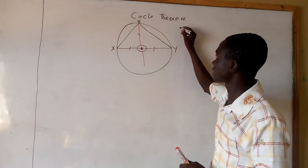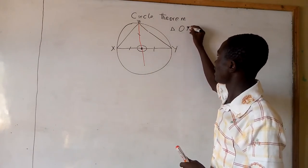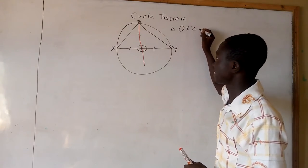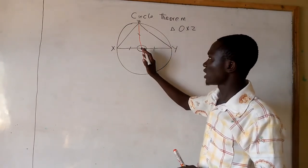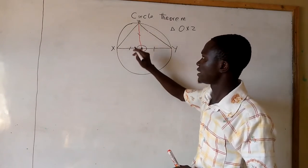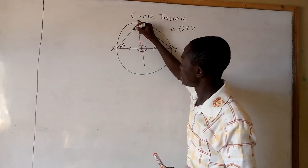Now, it means that triangle OXZ is an isosceles triangle. And for any isosceles triangle, the base angles are the same. So let us name here angle M. Here also the angle M.